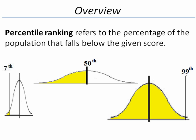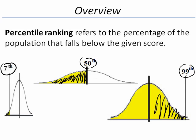Percentile ranking refers to the percentage of the population that falls below the given score. On this slide, our example to the left is for someone who is at the 7th percentile. Notice that they are above 7% of the population. In the middle is someone who is at the 50th percentile, and this person is above 50% of the population. The example on the right is for someone who is at the 99th percentile, and this person is above 99% of the population.